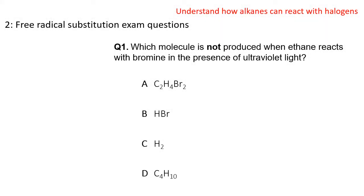There are different ways of asking questions about free radical substitution reactions in multiple choice questions, but I've chosen one here that's slightly out of the ordinary. It asks which molecule of A, B, C, or D is not produced when ethane reacts with bromine in the presence of ultraviolet light. Obviously it's a multiple choice question so we need to answer it quickly and get on with things.